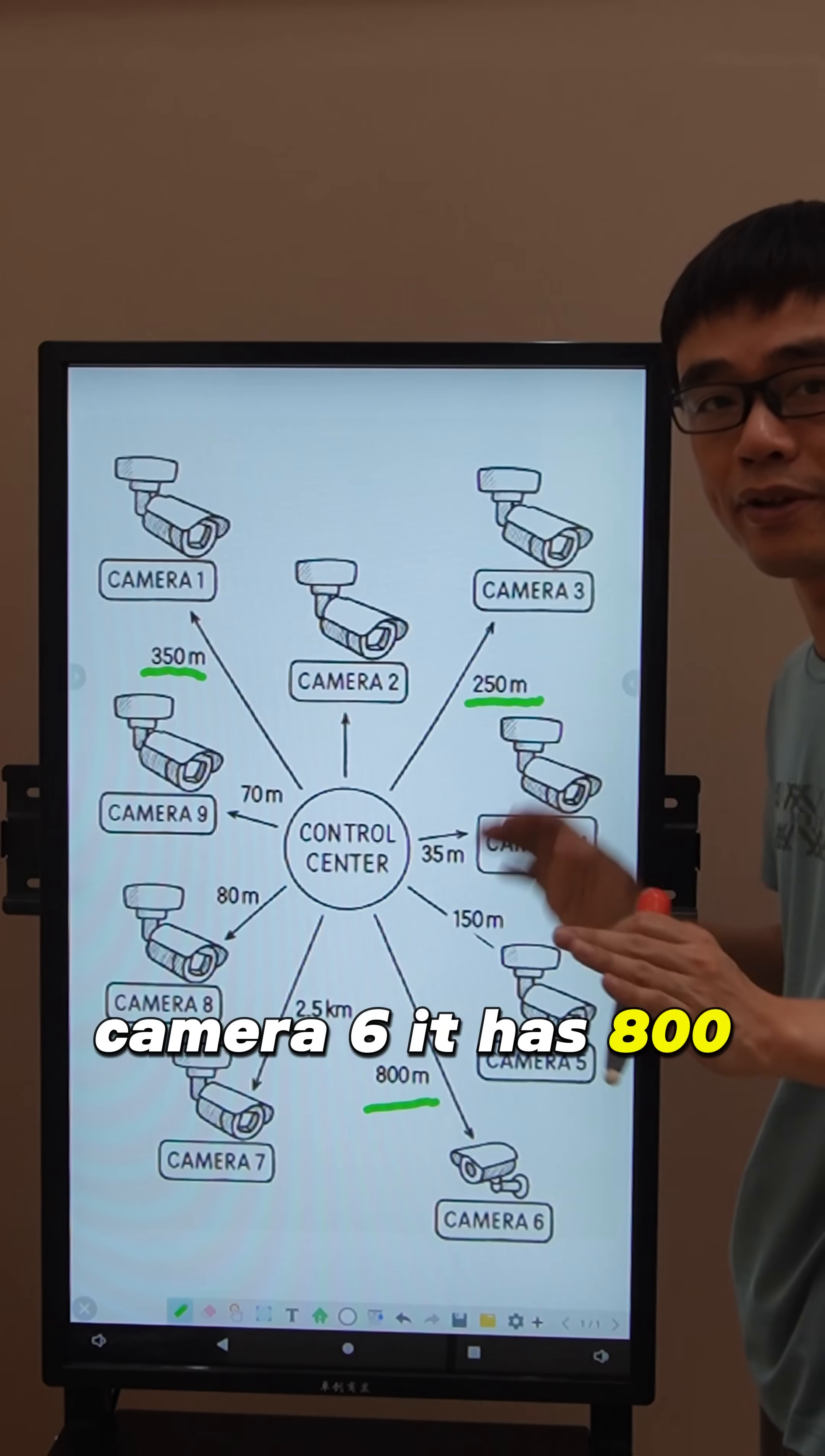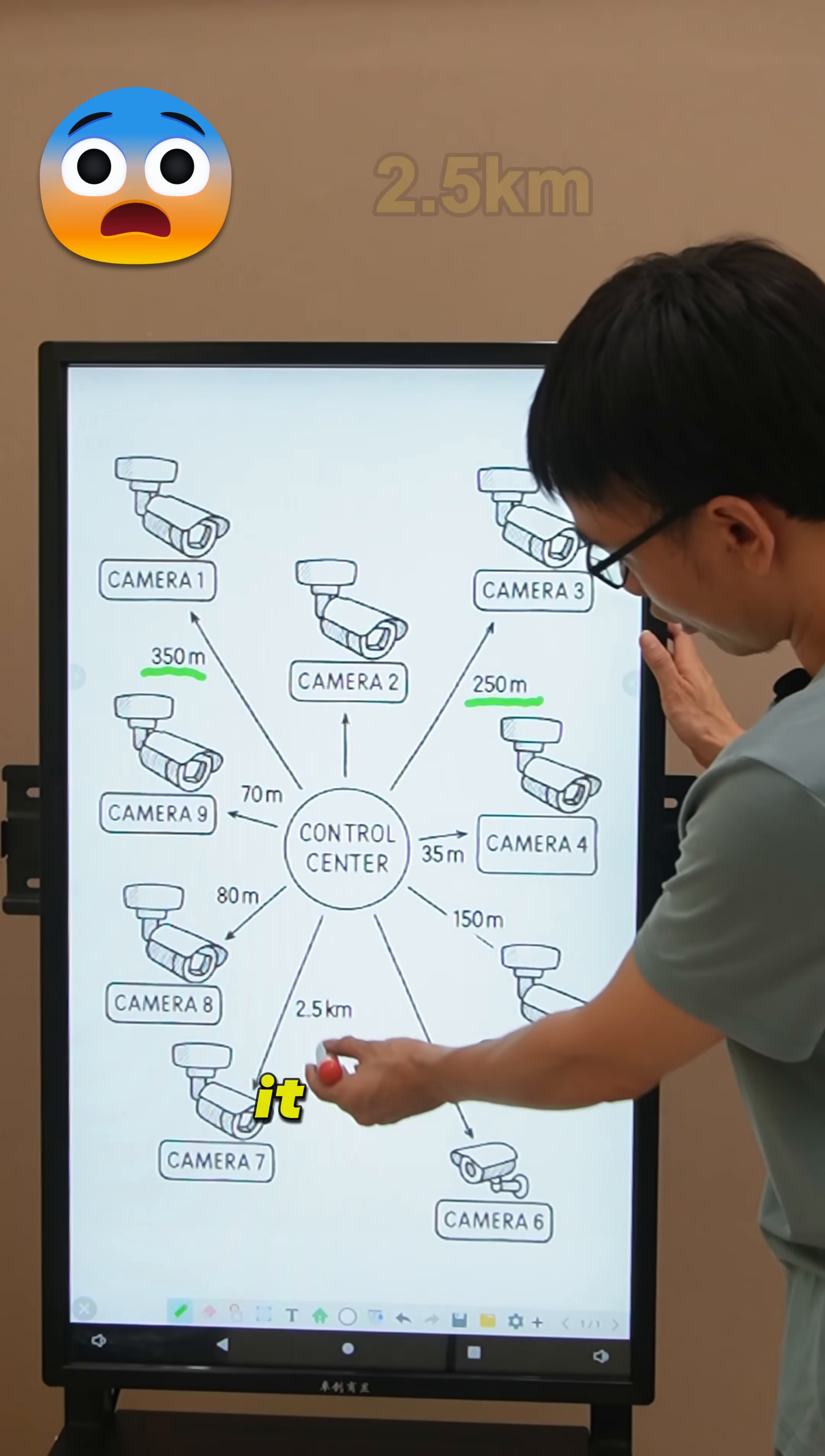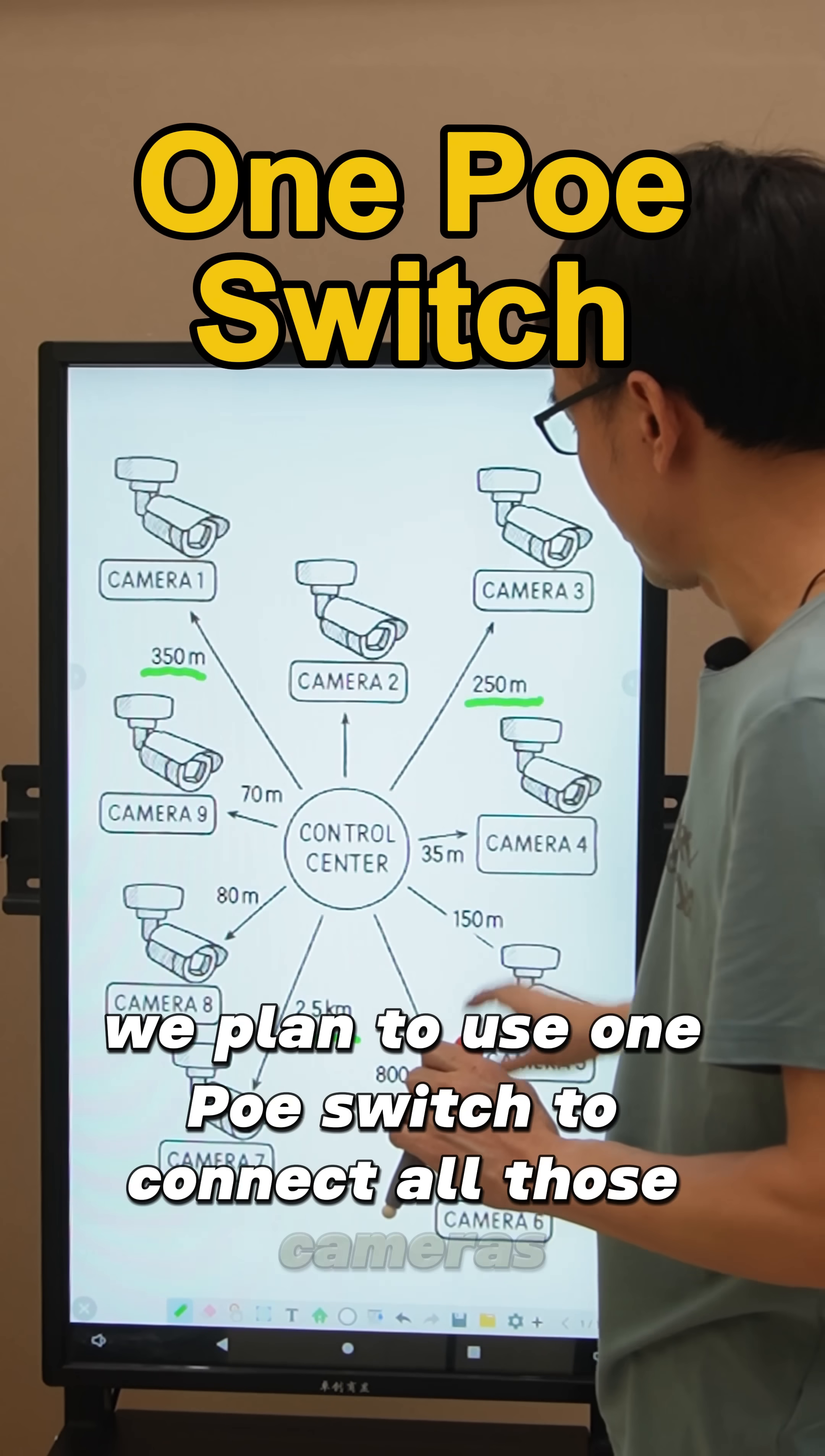Camera 6 has 800 meters from the control center to the setup spot. Camera 7 is the most challenging one, it's got 2.5 kilometers. We plan to use one PoE switch to connect all those cameras.